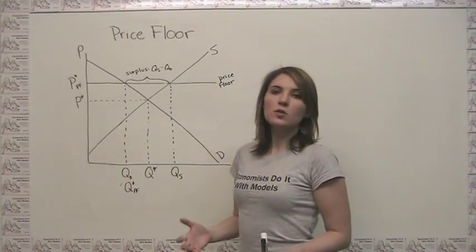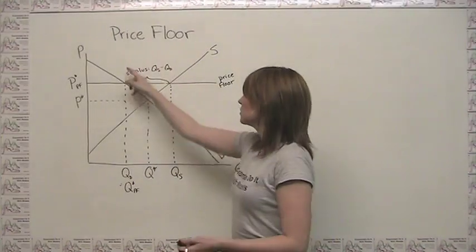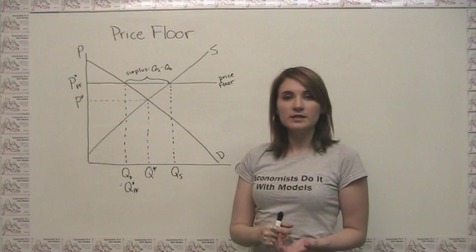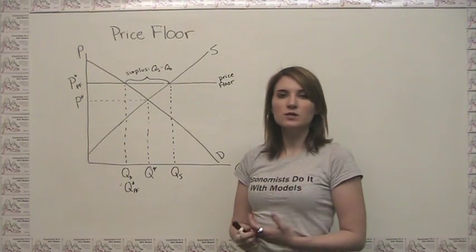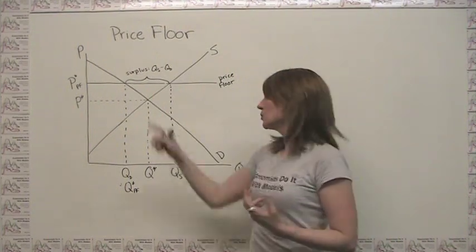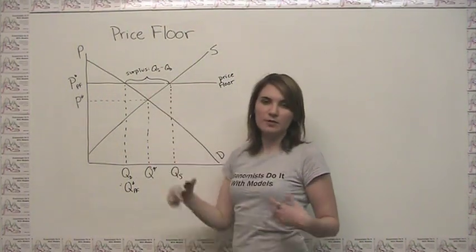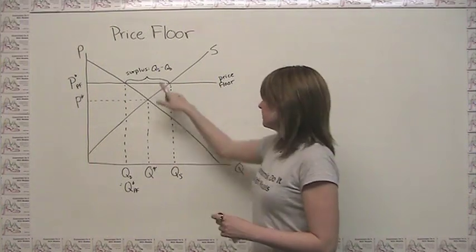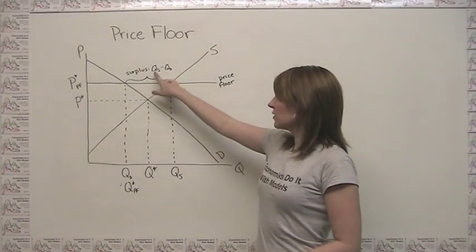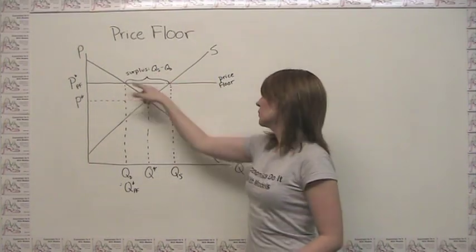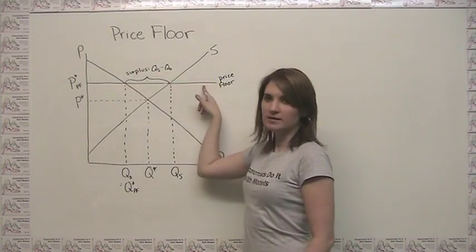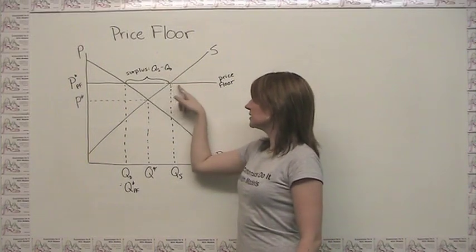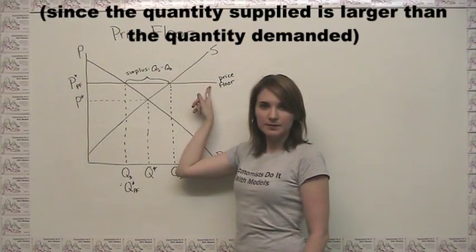We can quantify the surplus — the excess quantity that suppliers want to supply at the given price above and beyond the demand they're facing — as the quantity supplied at the price floor price minus the quantity demanded at the price floor price.